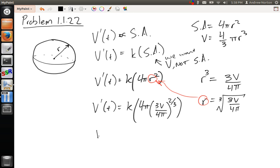What I can actually do here is simplify a little bit more and say that this is going to be 4^(1/3) π^(1/3), and then this will be 3V to the 2/3.